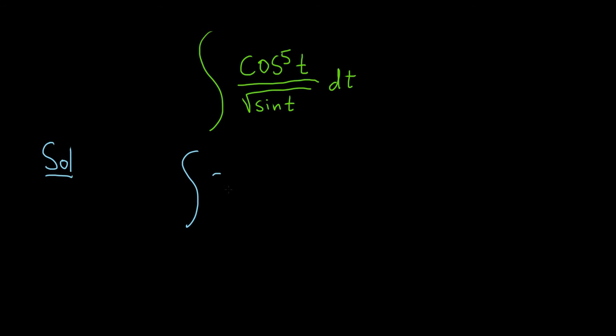So a good first step would be to write this as cosine to the fourth of t over the square root of sine t, and then factor out a copy of cosine. And the reason we do this is because whenever you have powers of sine and cosine, that's a good strategy.